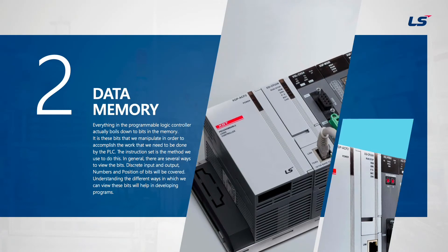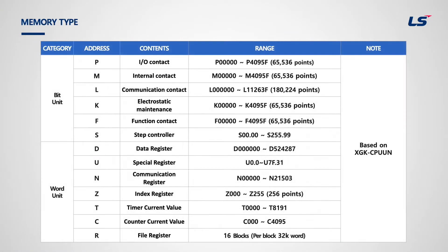In this chapter, we will take a look at PLC data memory. Here is the list of PLC data memory for XGK. The range is based on XGK CPU UN type. First, let's categorize the memory whether it is based on bit or word.